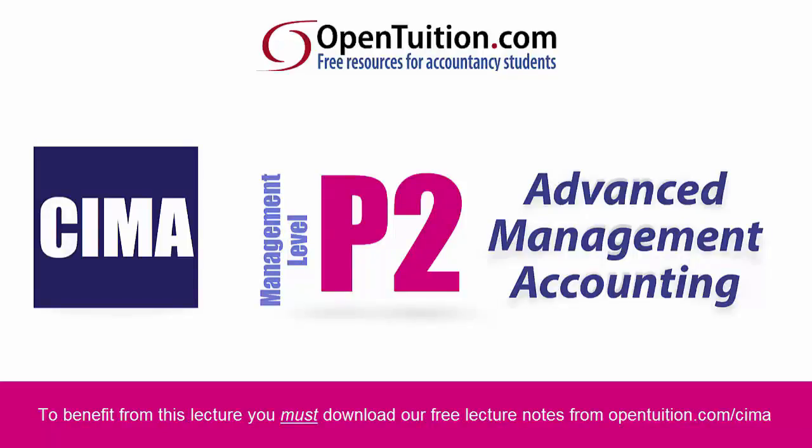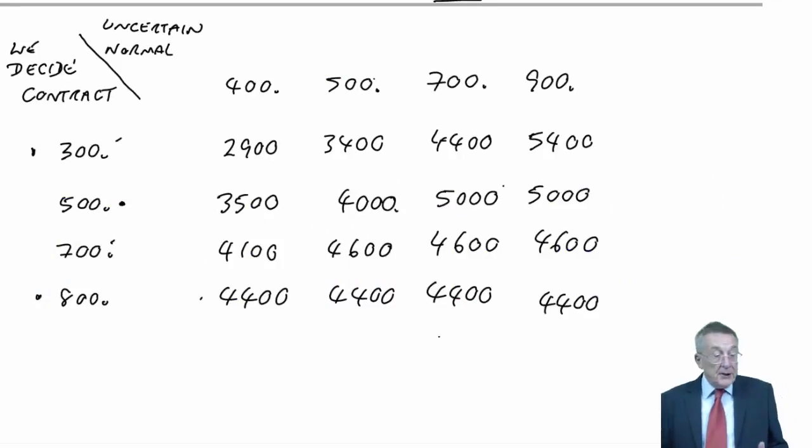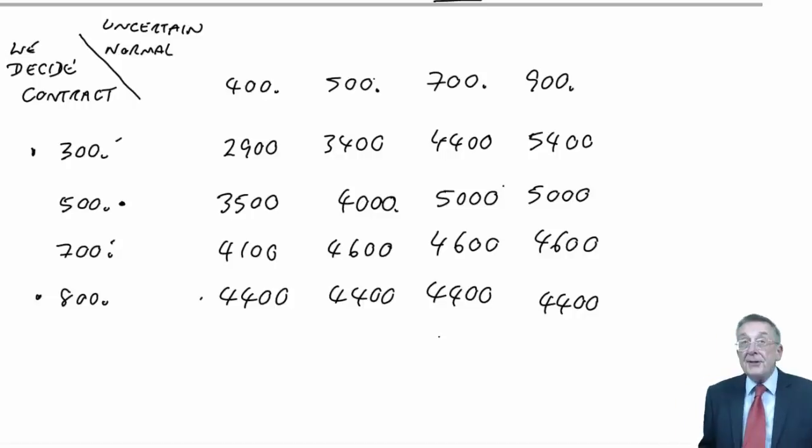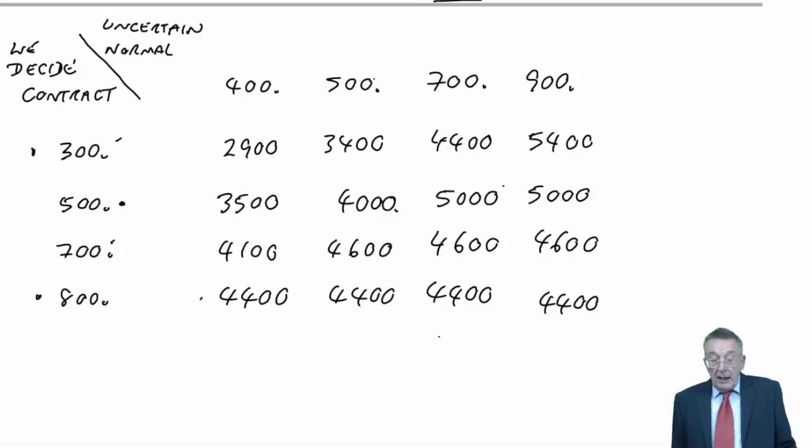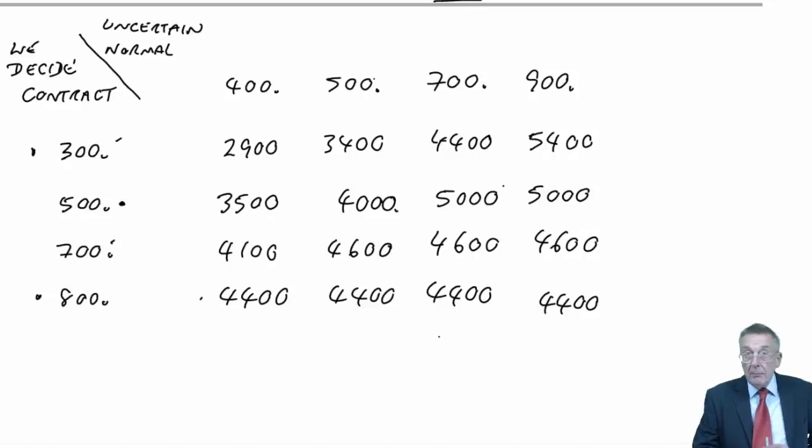This is a lecture from Open Tuition. To benefit from the lecture, you should download the free lecture notes from opentuition.com. We're still on exercise two from the chapter on risk and uncertainty. We've done parts A and B. In part A, we set up our payoff table, our profit table.